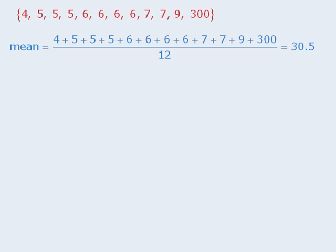Now notice what happens when we find the mean, median, and mode of these 12 numbers. The mean is 30.5, the median is 6, and the mode is 6.